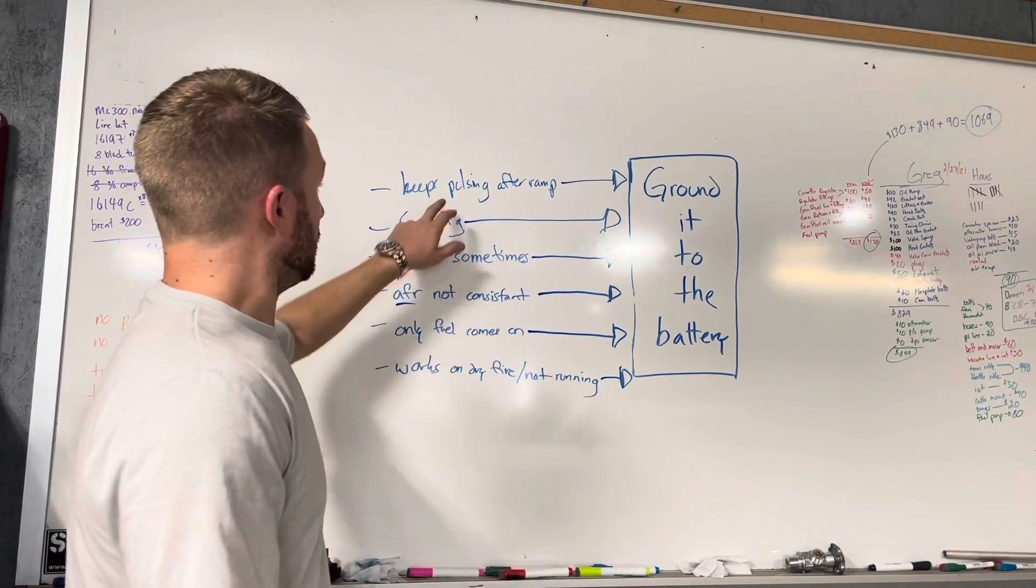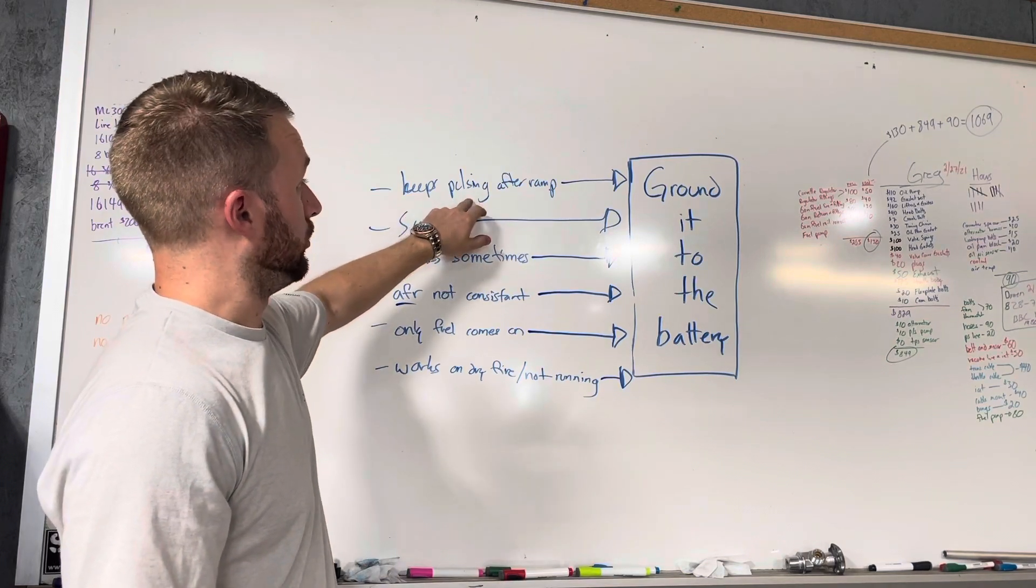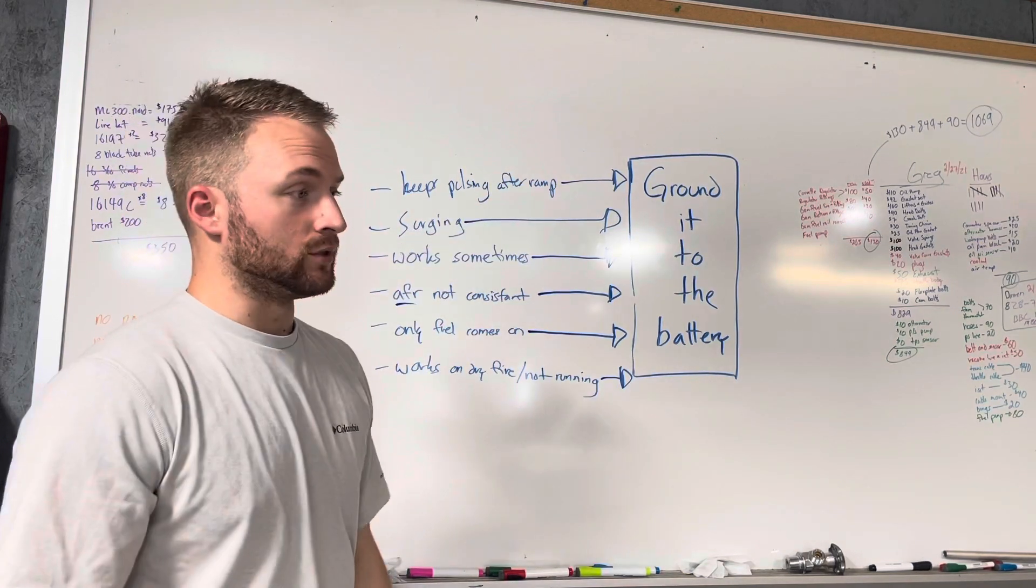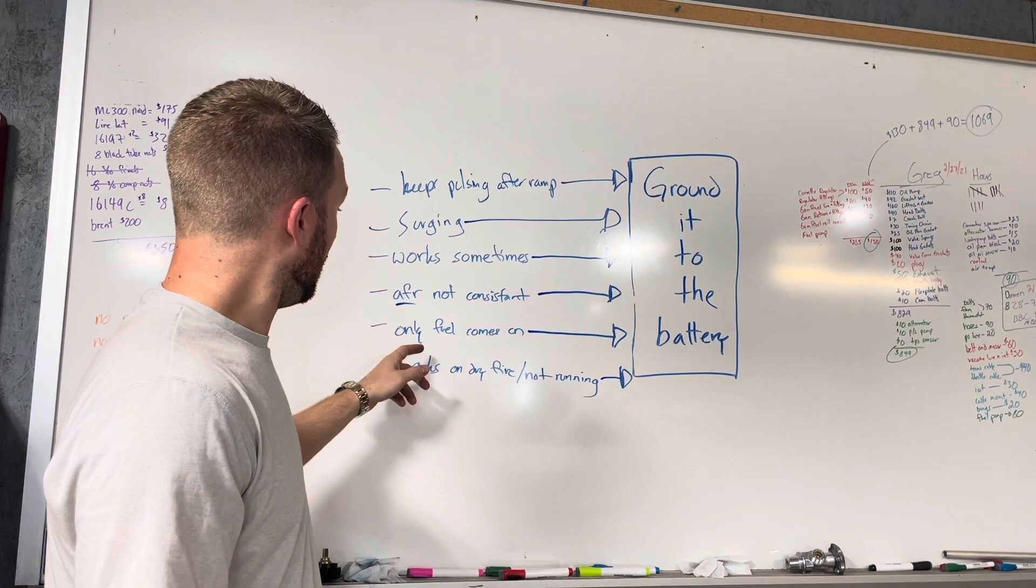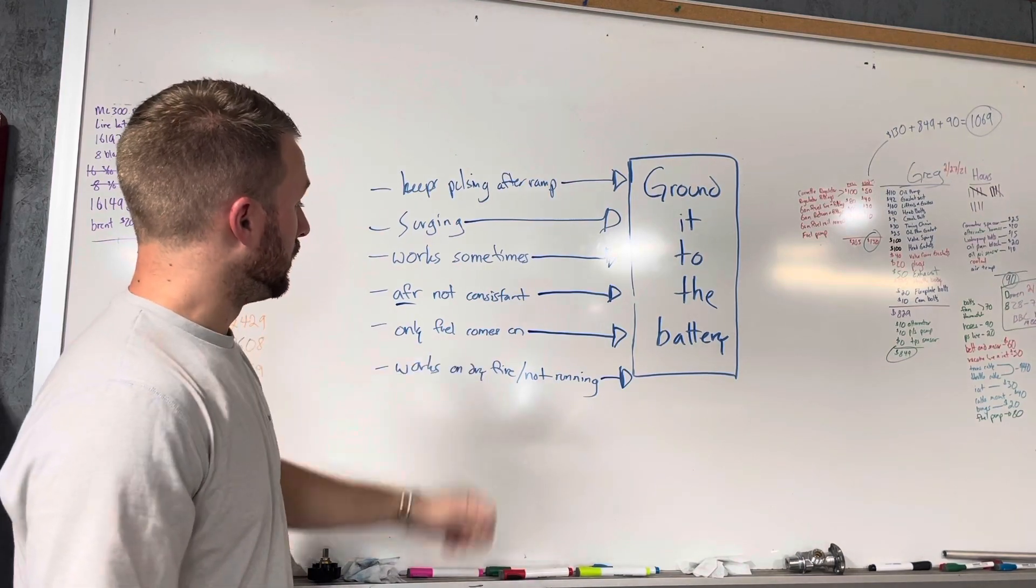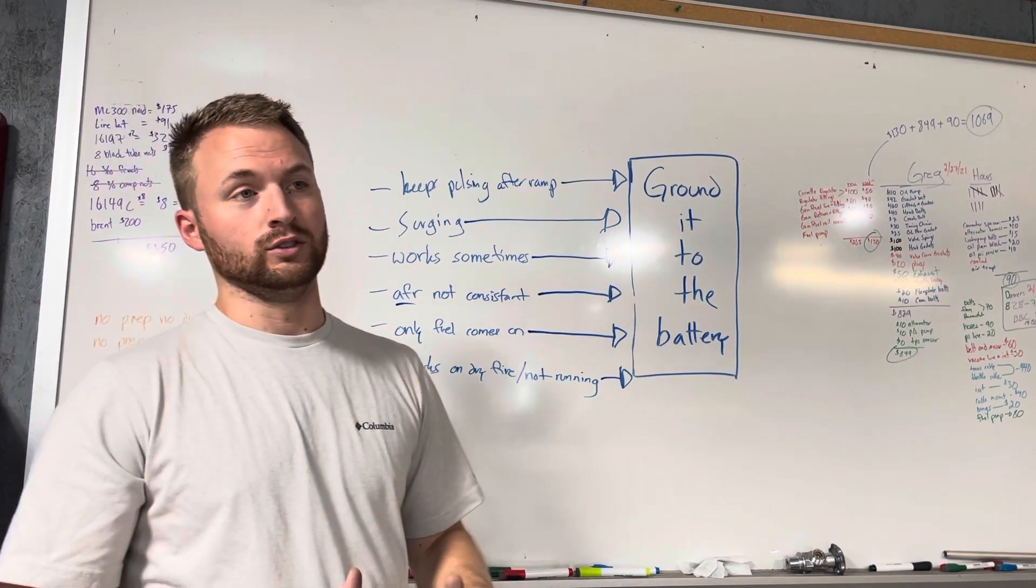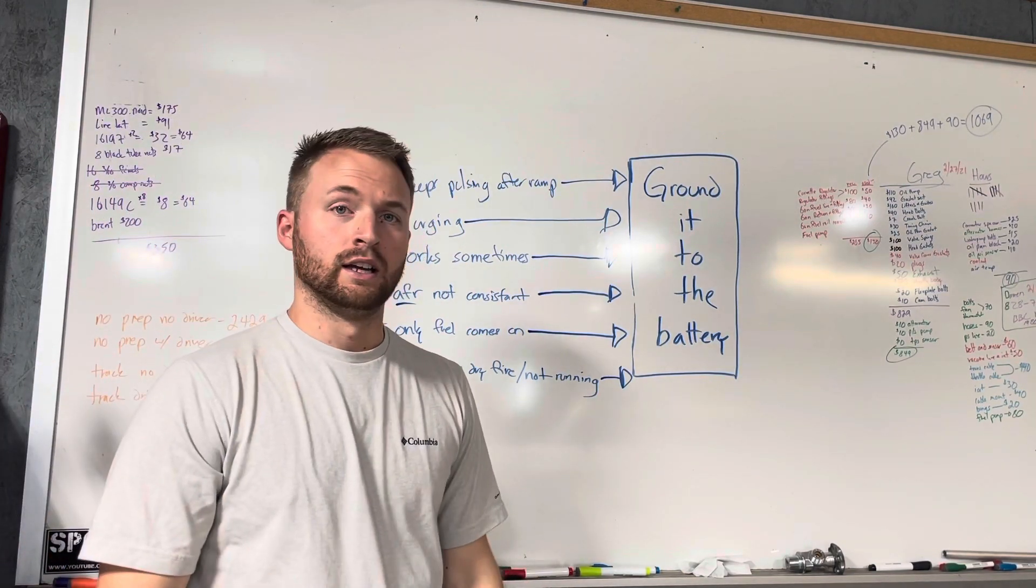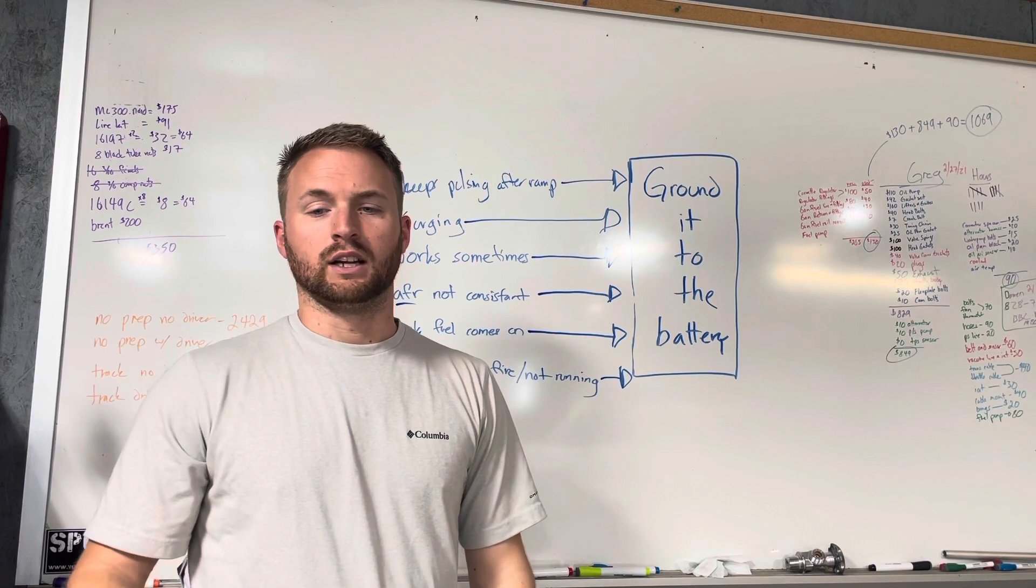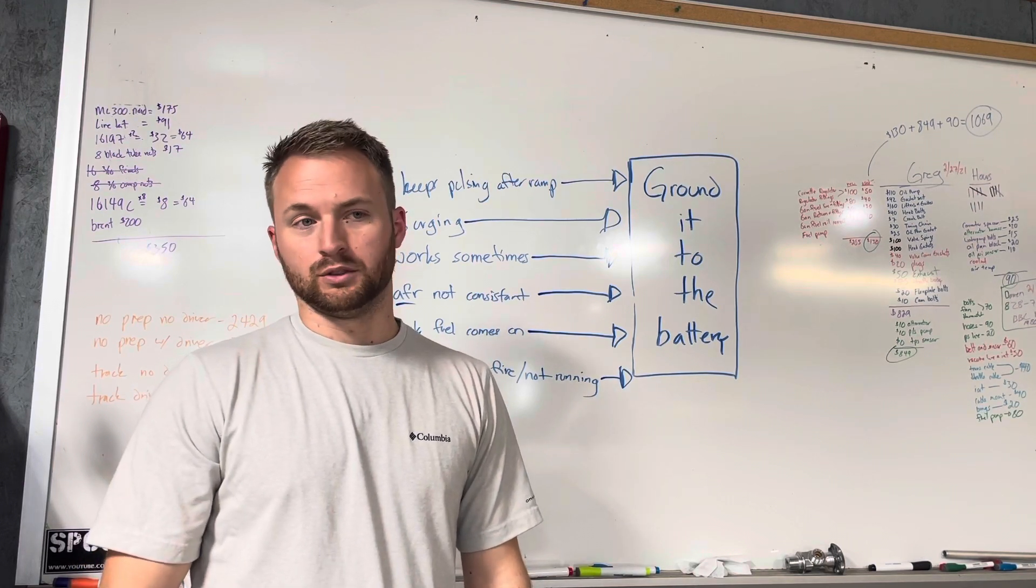The reason is the nitrous solenoid or the fuel solenoid may keep pulsing after the ramp. If only the fuel solenoid comes on, typically this is a case, an extreme case, of you don't have enough power going to them. The fuel solenoid might take 10 amps to open up, whereas a nitrous solenoid takes 20 amps or some cases 30 amps to open up the solenoid.